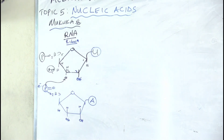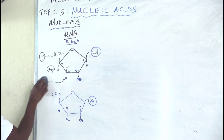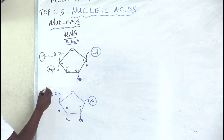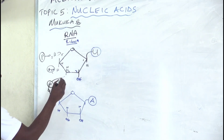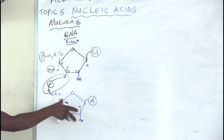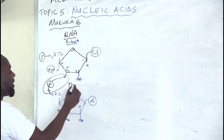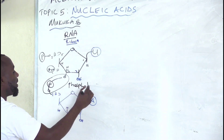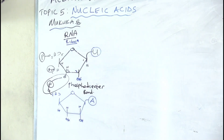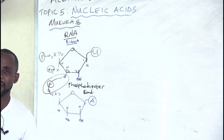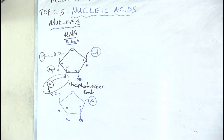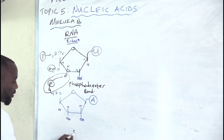The phosphate bonds to that carbon, and the name of this bond linking one nucleotide to another is called a phosphodiester bond. In the synthesis of nucleic acids, phosphodiester bonds link successive nucleotides.